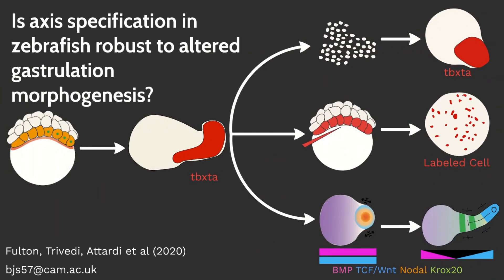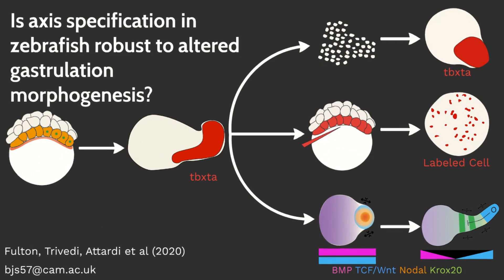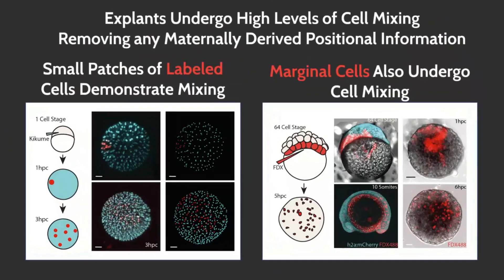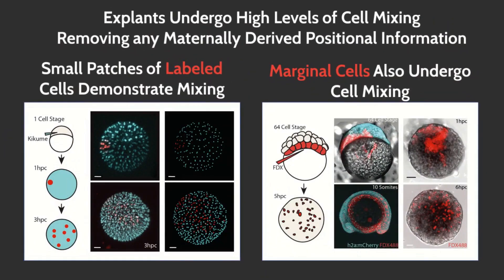To test whether cell mixing is happening in pescoids that haven't been dissociated, we label pescoids in two ways. First, we label small patches of cells using a nuclear-localized photoconvertible protein, immediately after explanting the pescoid. After three hours in culture, we observe mixing of the labelled and unlabelled cells, with labelled cells spread across the entire pescoid.